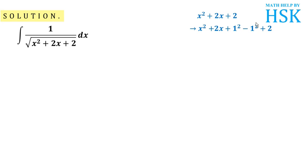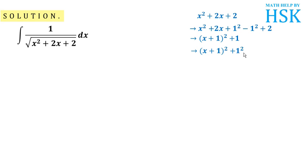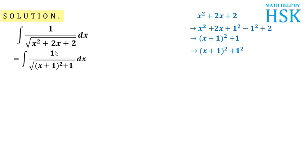Having added 1 squared and subtracted 1 squared, this becomes exactly equal to (x plus 1) whole squared, and those two values give me 1. So this expression becomes (x plus 1) whole squared plus 1, which can be written as (x plus 1) whole squared plus 1 squared. This is how we have converted the quadratic expression into the square of a variable plus the square of a constant. I am going to substitute this in place of x squared plus 2x plus 2, giving me 1 upon under root of (x plus 1) whole squared plus 1.